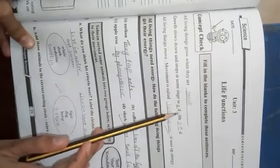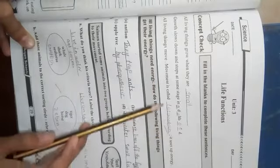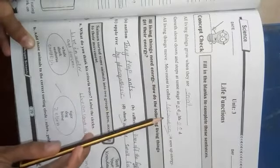Growth slows down and stops at some stage in adulthood. All living things move. Movement is called locomotion. It uses up energy.